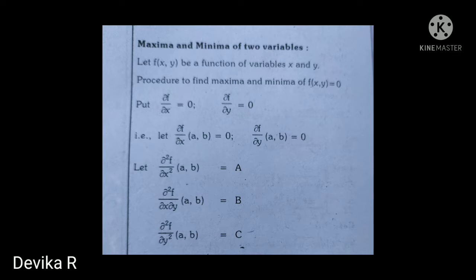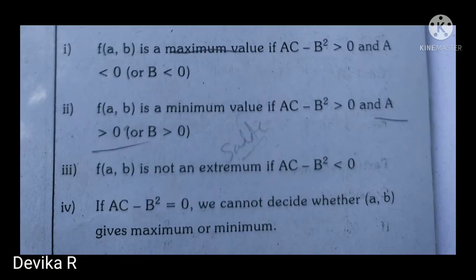Next, find ∂²f/∂x² at the point (a, b) — this term is called A. Then ∂²f/∂x∂y at (a, b) — this term is called B. Then ∂²f/∂y² at (a, b) — this term is called C. Then find AC minus B².